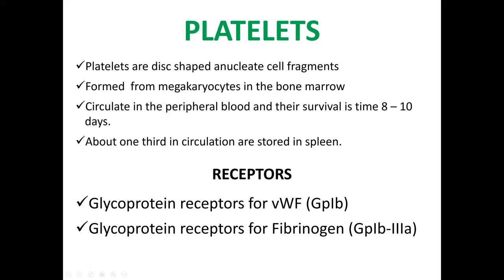About one third of platelets in the circulation are stored in the spleen. There are certain receptors on the platelets: number one, glycoprotein receptors for von Willebrand factor, which is GP1B, and glycoprotein receptors for fibrinogen, which is GP1B3A.